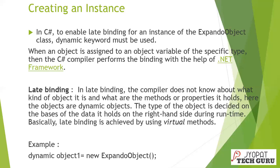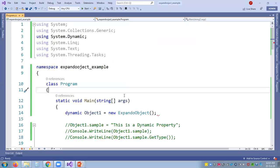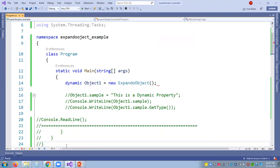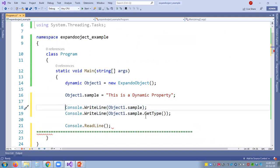To create an object of the ExpandoObject class, I cannot create the instance like normal classes. Here I'm using: dynamic object1 = new ExpandoObject(). You can add properties, methods, and events to instances of the ExpandoObject class. In this program, I have taken object1.Sample equal to "This is a dynamic property" and using Console.WriteLine I'm printing Sample and using GetType() to extract the data type. Let me switch to Visual Studio — for convenience, I have already written the program here, let me execute and show you the output.